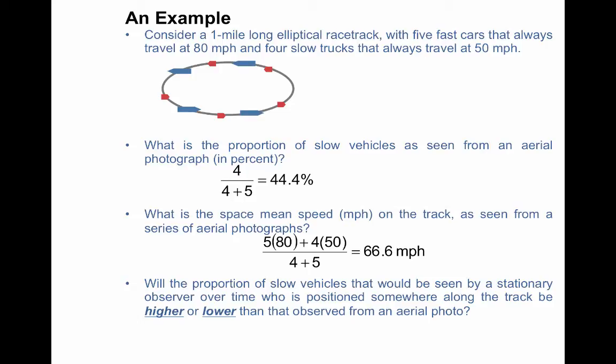So in order to do that, we will take the density of the fast times the speed, so 5 times 80, plus the density of the slow times the speed, which is 50, divided by the total density. So we're distributing the speeds by the density ratio. So the space mean speed here is 66.6 miles per hour.